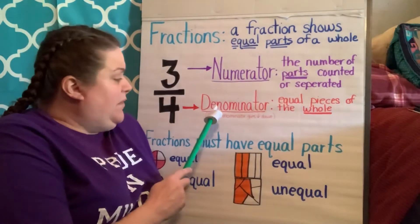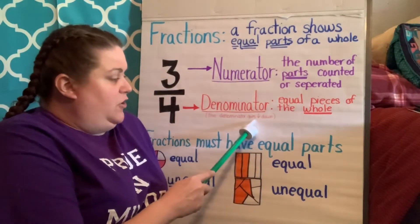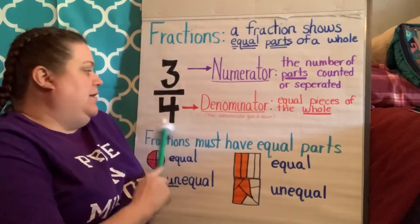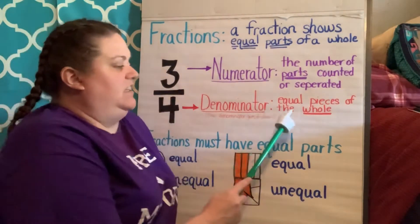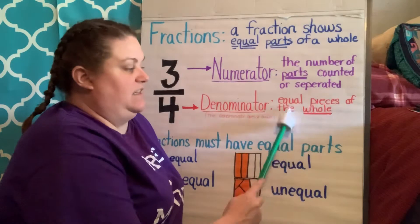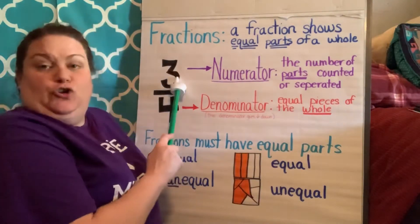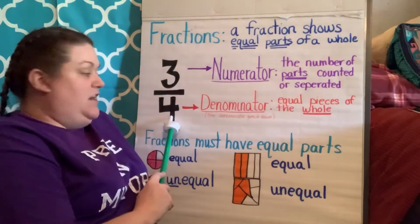I also remember denominator because the denominator goes down. It's the down number. So denominator is the equal pieces of the whole and it goes down. So this is your numerator on top, denominator on the bottom.